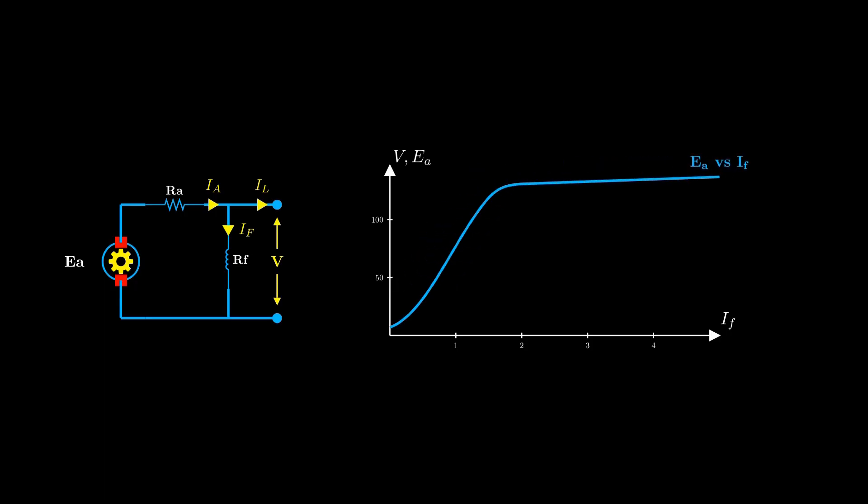This field current in turn strengthens the magnetic field flux in the poles. This creates a powerful positive feedback loop.